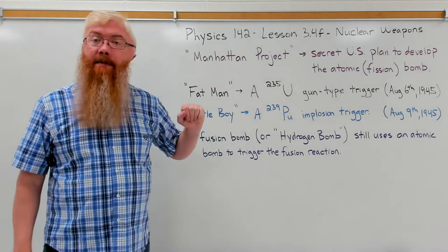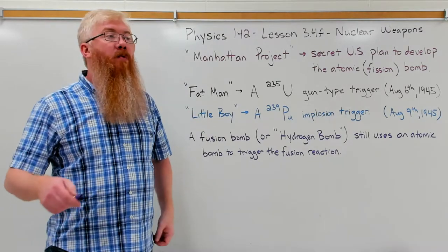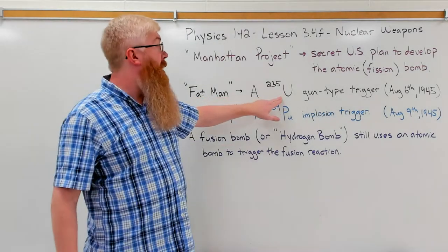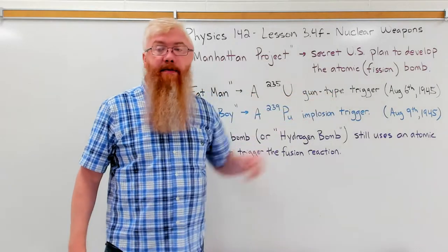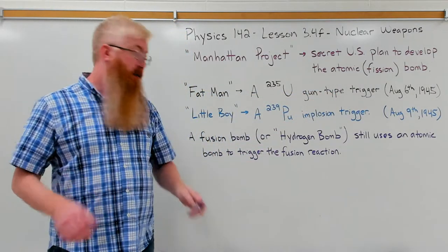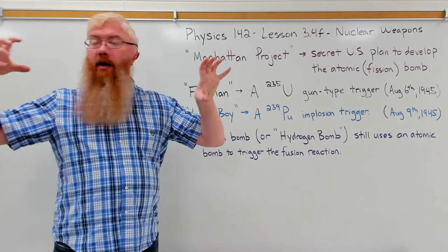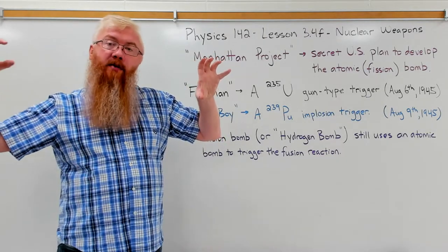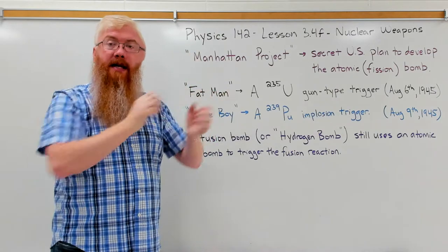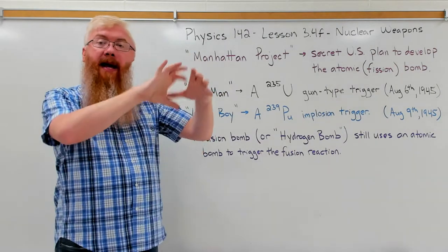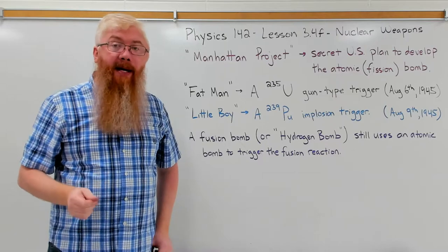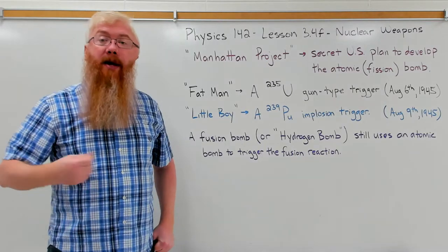The first bomb dropped was actually a uranium-235 gun-type trigger, which meant that there was a little sphere of uranium with a hollow point, a uranium bullet. The uranium bullet was fired into the uranium sphere, creating a large quantity of uranium, enriched uranium, which went critical.